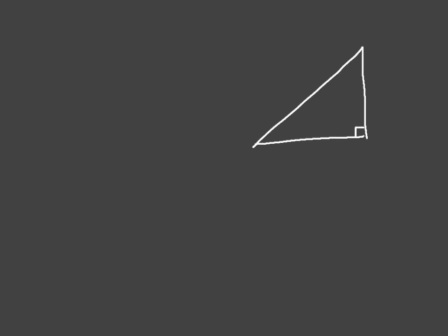Let's look at one last example. Let's say we're given this right-angle triangle. We're given the length of the hypotenuse, which is 12, and we're given this side length, which is 8. We're asked to find this angle named x. Just as in the two previous examples, we start by looking at the information given relative to the angle x. Relative to x, we can see we're given the opposite side length, which is 8 — so we write O (opposite) = 8 — and the hypotenuse, which is 12, so we write H (hypotenuse) = 12.